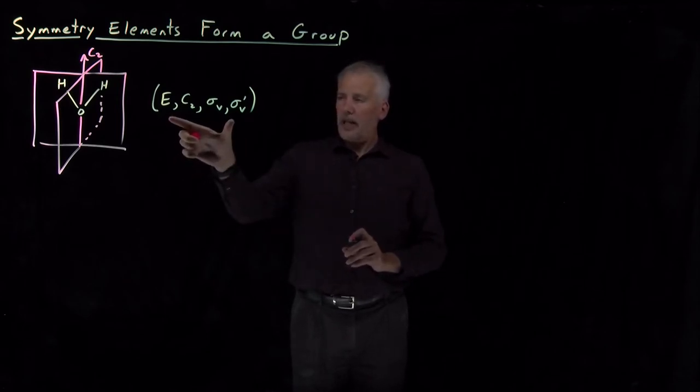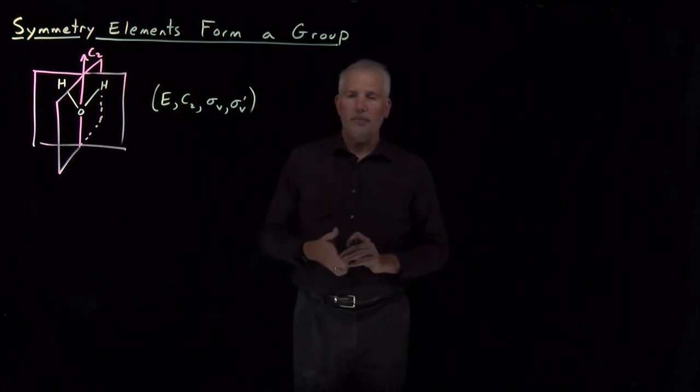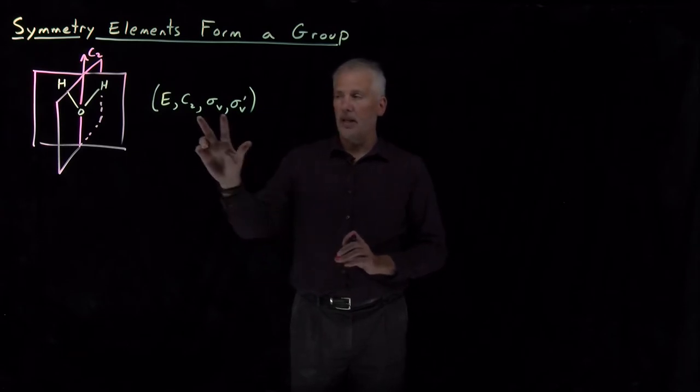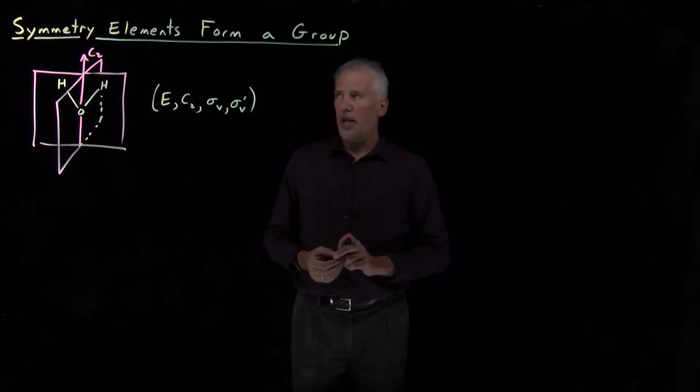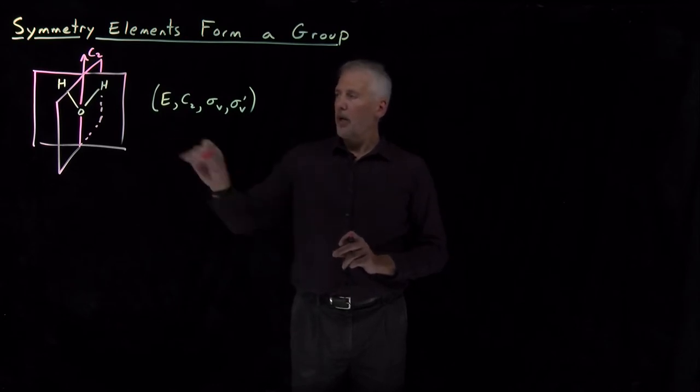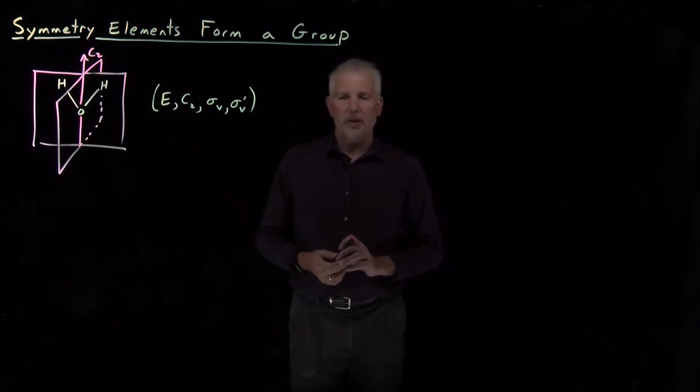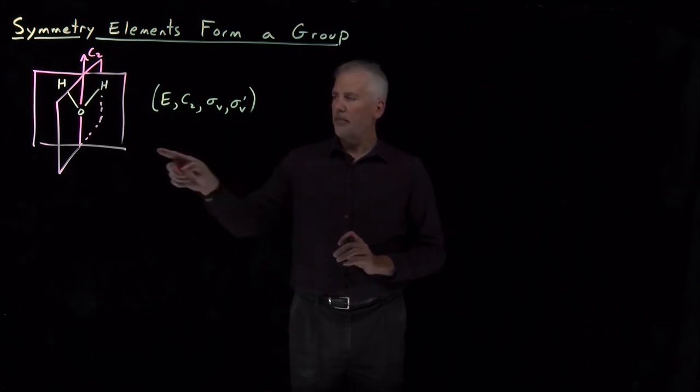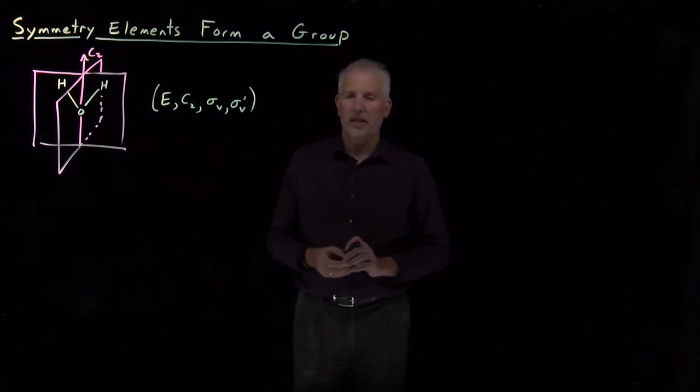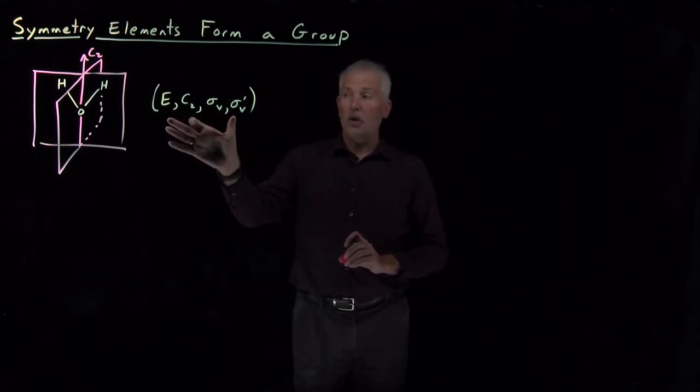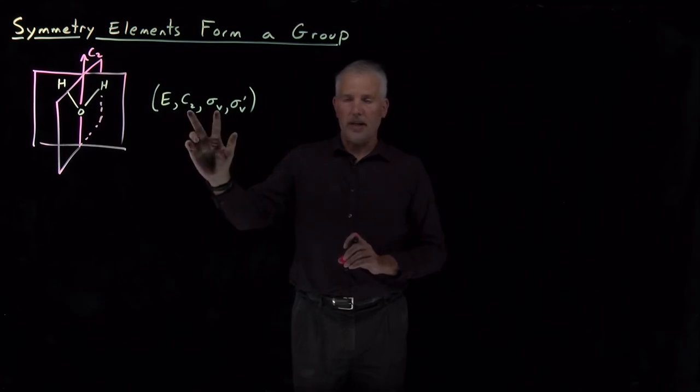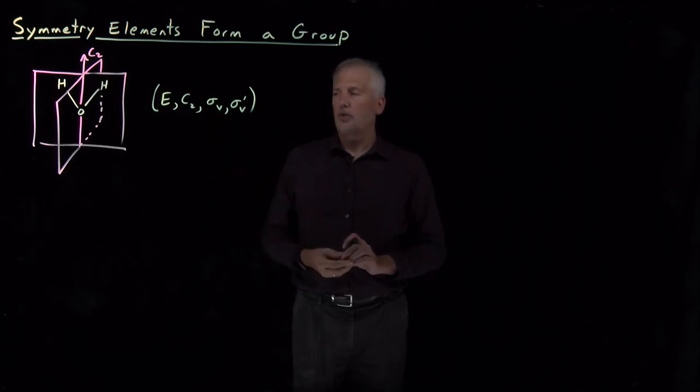So my claim has been that the symmetry elements of a molecule form a group, and in particular, they form a group under this operation of composition. If we combine two symmetry elements by performing them back-to-back, then under that operation, the symmetry elements form a group. So we can check whether that's true for this case of water, and the most difficult part to check is whether these symmetry elements are closed under composition. Every time I combine two of these elements, I get another element that's already in the group.